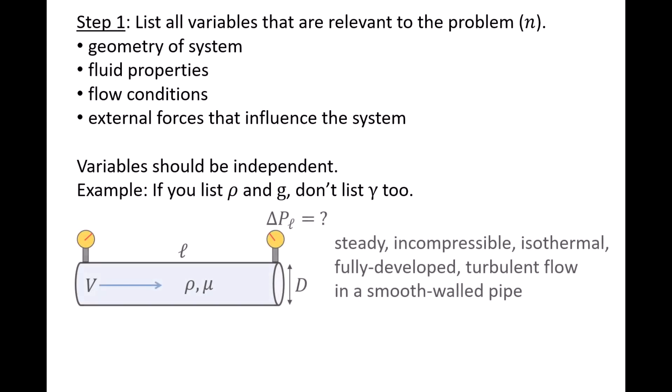In a previous video, we discussed a scenario where we wanted to develop a functional relationship for the pressure drop per length of pipe, delta PL, for a pipe that is horizontal and smooth and experiencing steady, incompressible, isothermal, fully developed, turbulent flow. We found that delta PL is some function of the flow speed v, pipe diameter d, fluid density rho, and the fluid's absolute viscosity mu. We have five variables, so n is equal to five.